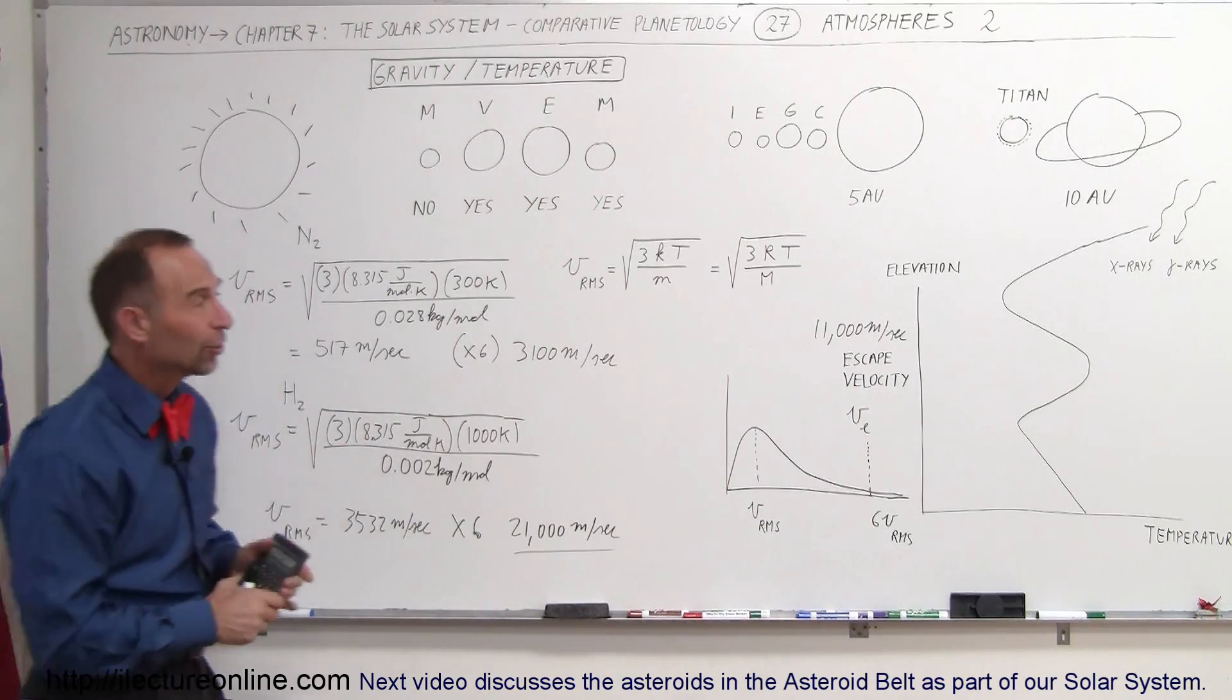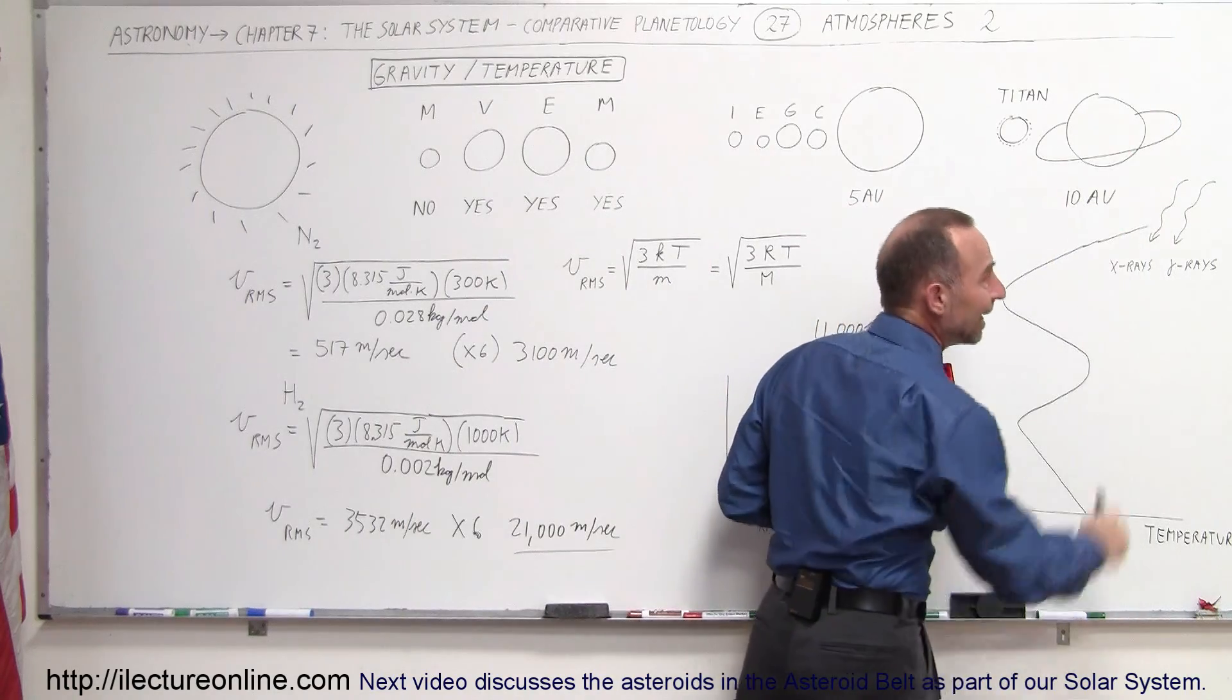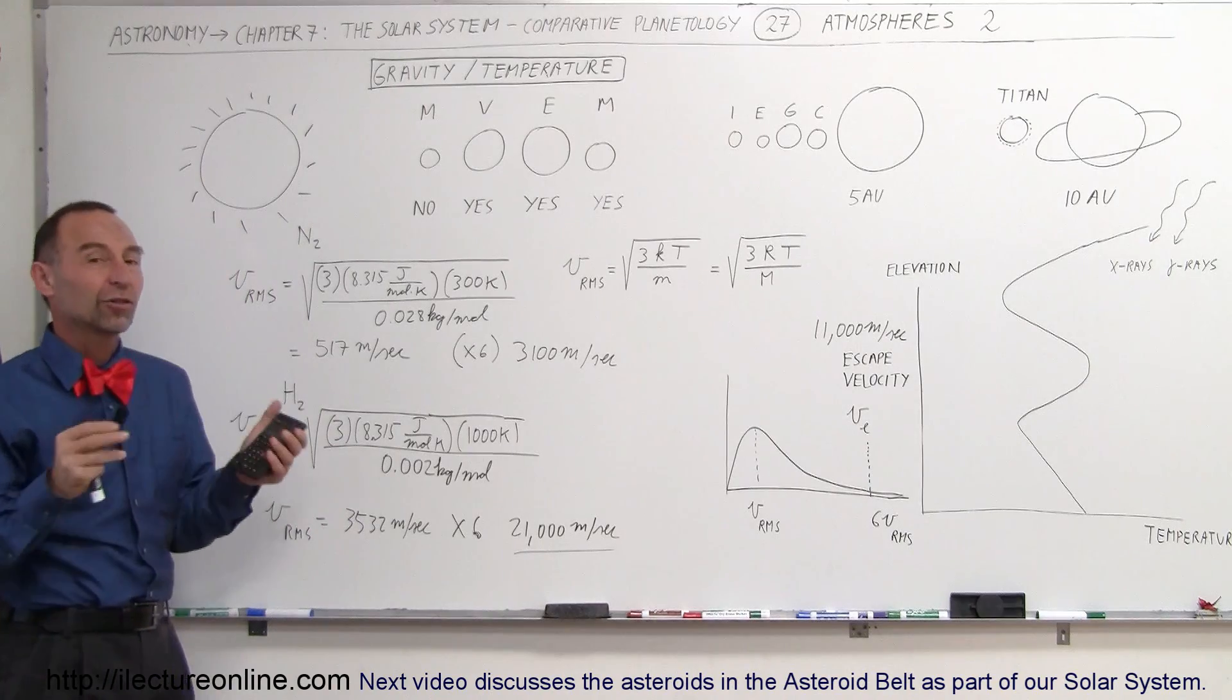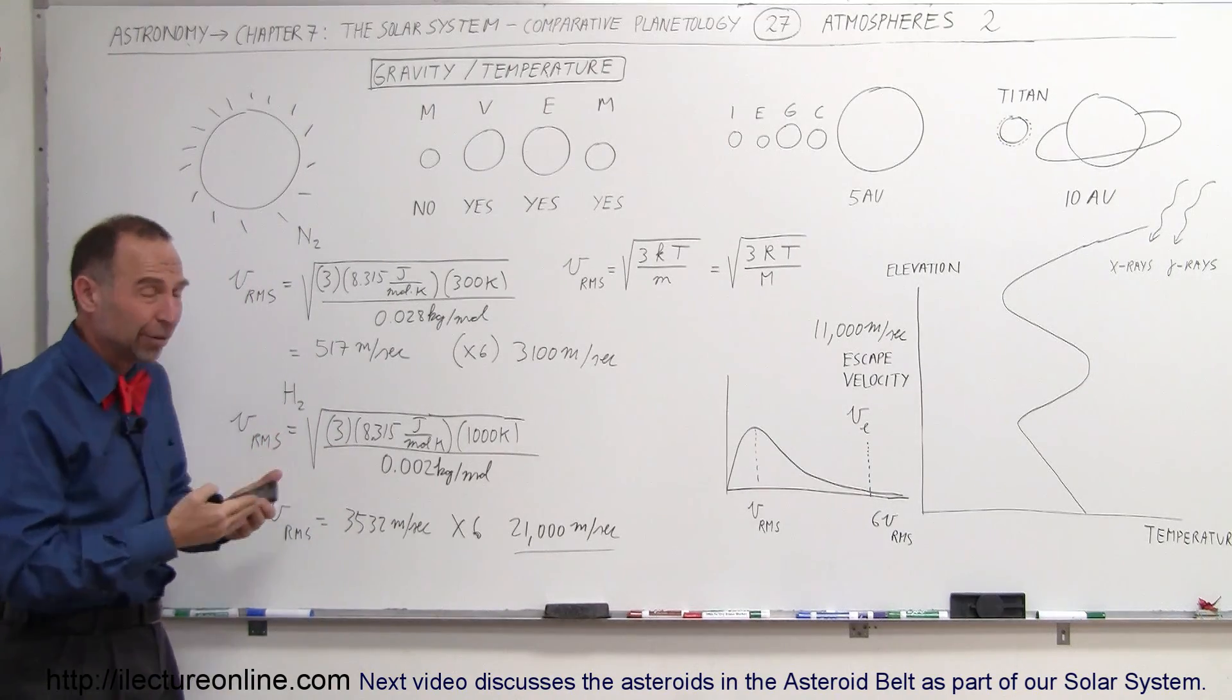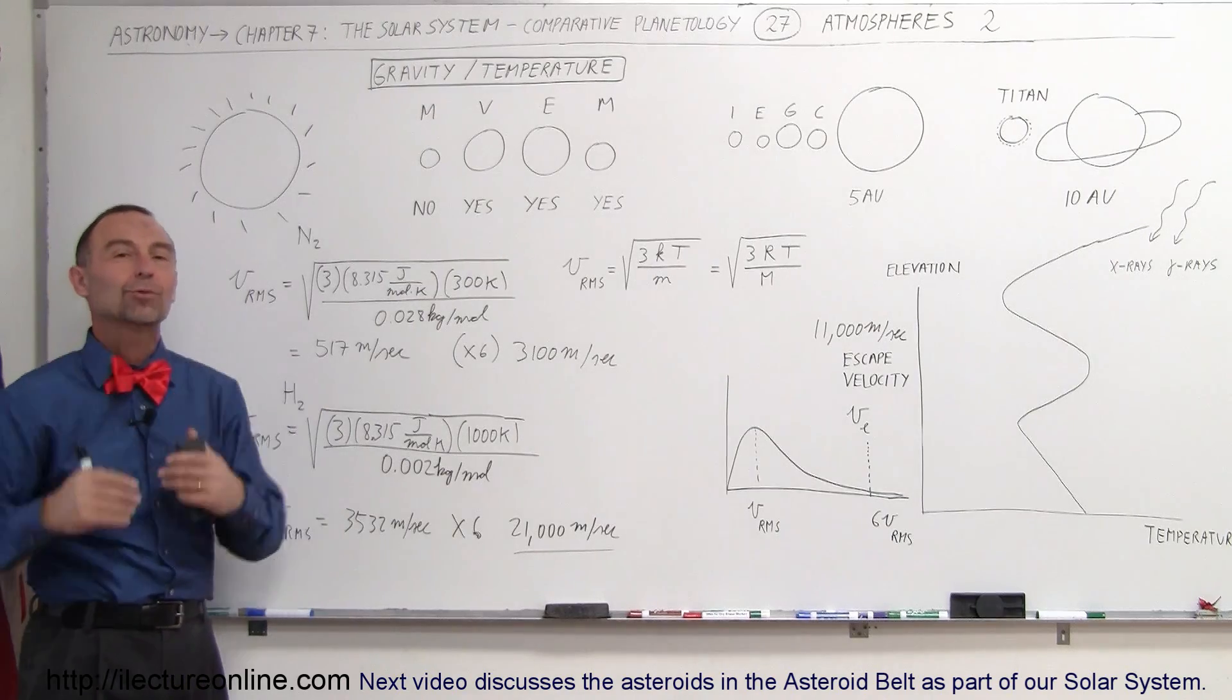And so, therefore, molecules that are way up there, especially the hydrogen molecules, could potentially take off away from the Earth. Again, it's a very small percentage. The process is very slow, and after the Earth being about 4.5, 4.6 billion years old, we still have the vast majority of the atmosphere.